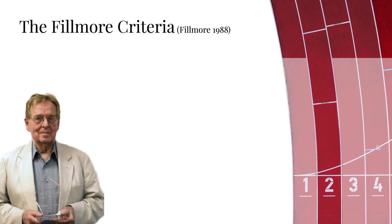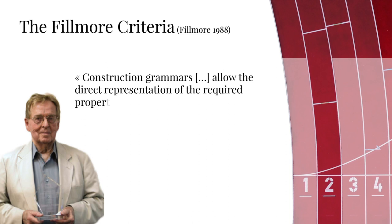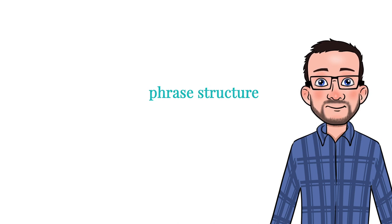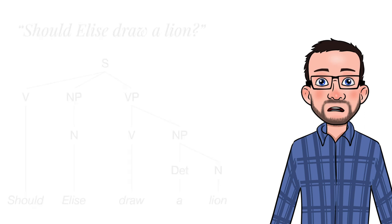The second criterion gets more technical. Construction grammars allow the direct representation of the required properties of subordinate constituents. In order to understand this criterion, you need to know something about what linguists call phrase structure. Don't worry if you've never heard of phrase structure before — I will explain all of that in the next video. For the time being, it is enough to know that one of the most widespread ways of analyzing a sentence in linguistics is to draw a tree structure that represents the constituents of a sentence.